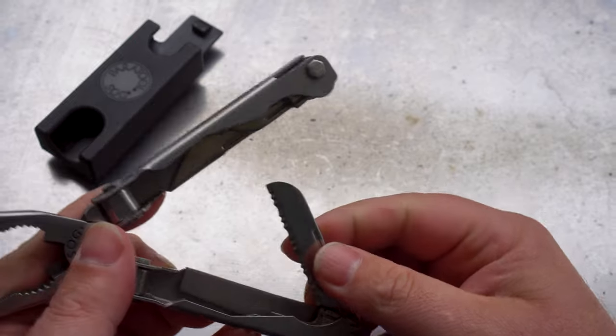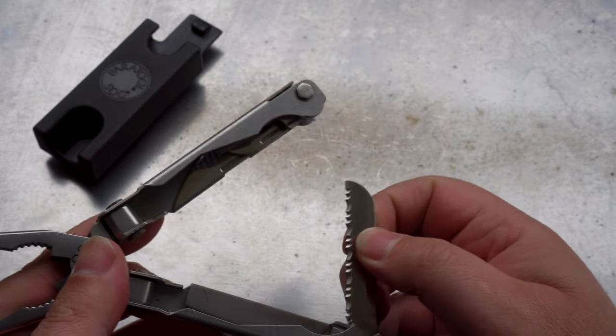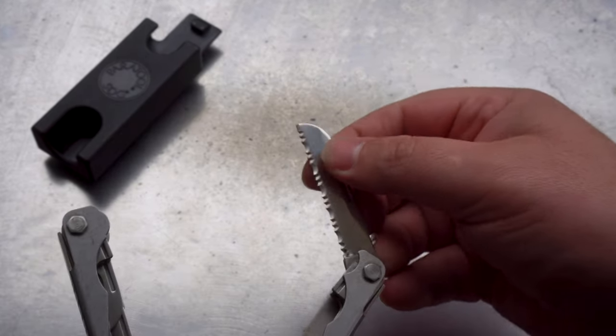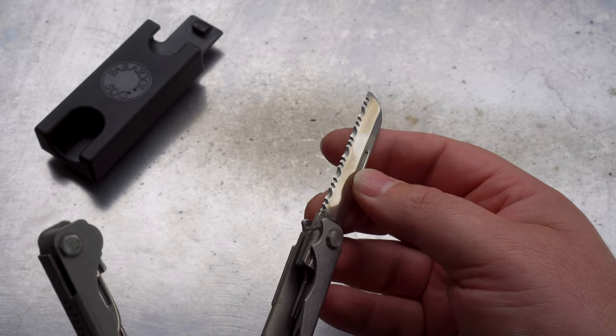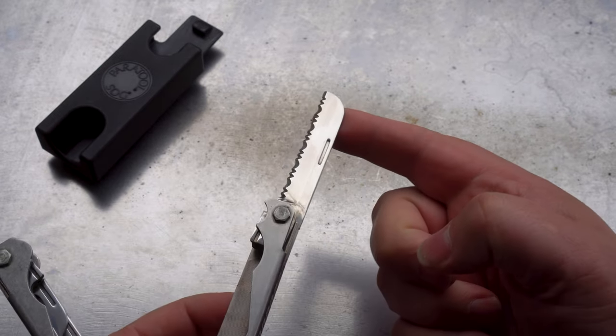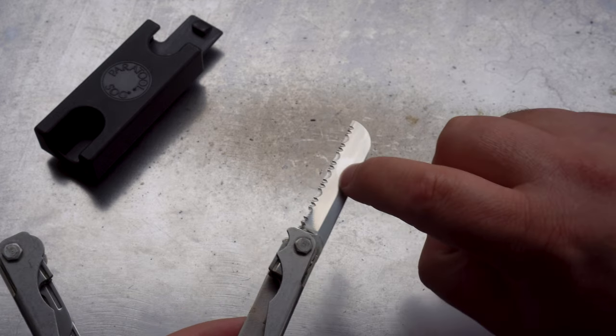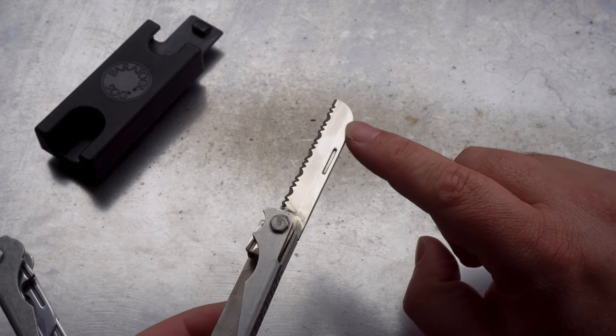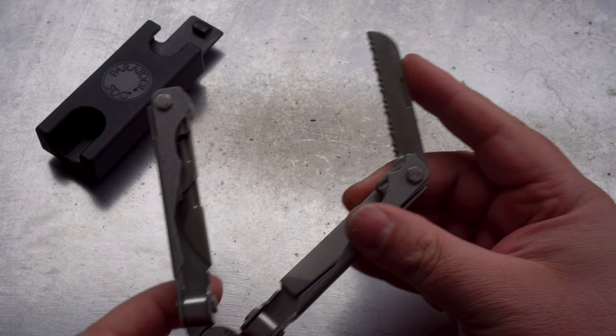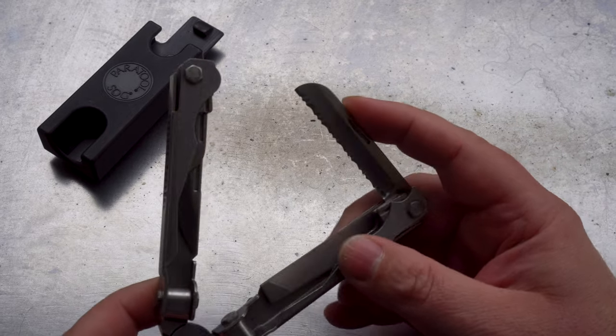First up we have the serrated sheep's foot knife. The way to tell if you've got an early production version is that the little nail nick here is not completely hollow all through. There's quite a bit of tension on that spring.